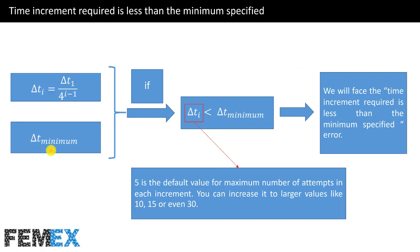The minimum value of the time increment is set in the incrementation tab of the static general step. The time increment size of the i-th attempt equals the time increment size of the first attempt divided by 4 to the power of (i minus 1). If the time increment size of the i-th attempt falls below the minimum value of the time increment, the 'time increment required is less than the minimum specified' error occurs.